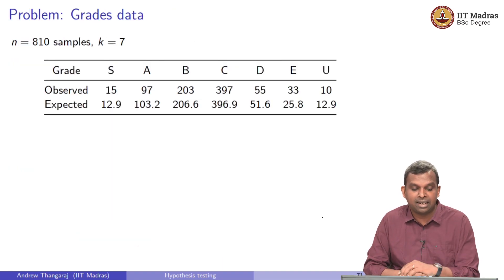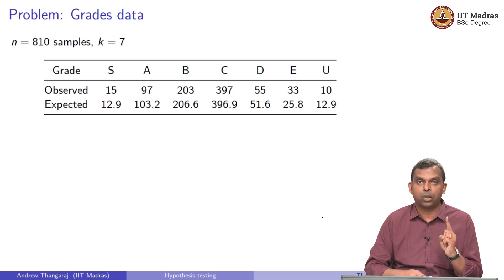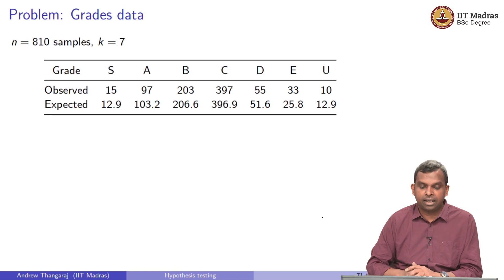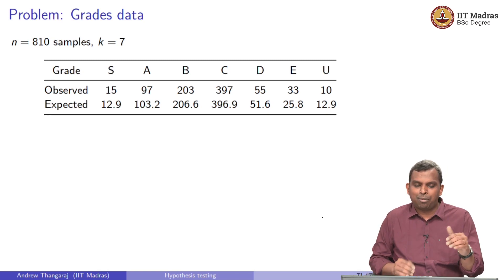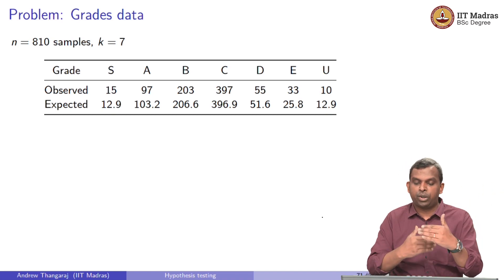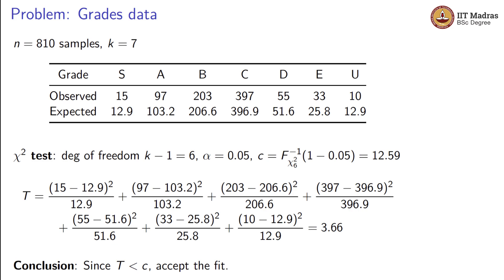Let us see how it applies for our grades data. In this grades data, we have 810 samples and k equals 7. Notice n and k are the only things that play a role there. We have the observed count and the expected count. I put it out separately in two tables in the previous slide. I have put it together to show you how it works. So the chi-squared test has degree of freedom k minus 1, which is 6. We can pick alpha equals 0.05 and then find the critical value just like before, but instead we will use the chi-squared 6 distribution. F inverse chi-squared 6 of 1 minus 0.05, that is the critical value that works out to 12.59. Then we go ahead and calculate the actual test statistic for this data. You can see how I have done T equals 15 minus 12.9 squared by 12.9 and so on. Added up everything, you do that, you will get 3.66.